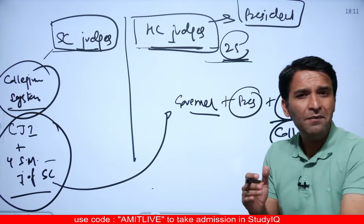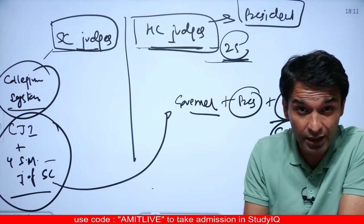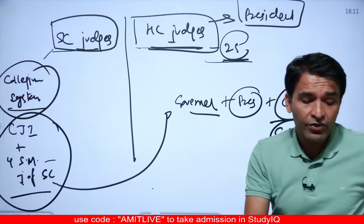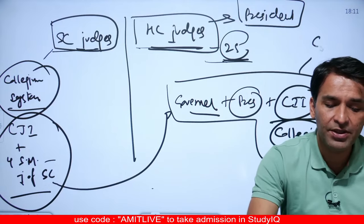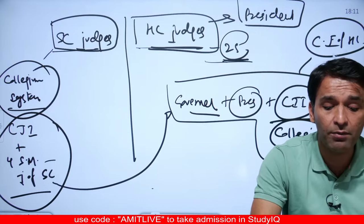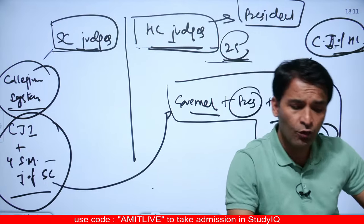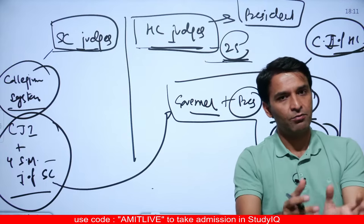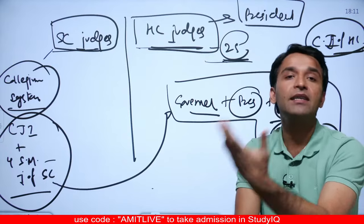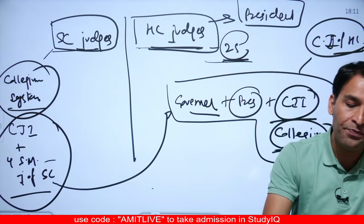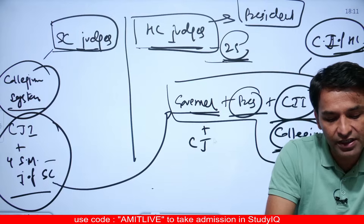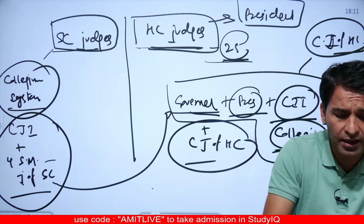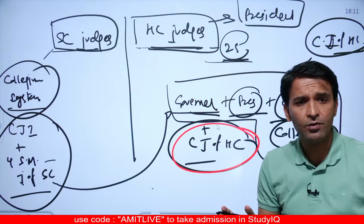When the Collegium recommends judges for a particular state's High Court, the Governor is also consulted. So the process involves the Governor, the President, and the Chief Justice of India — legally understood as the Collegium. For a common High Court covering two states, both Governors are consulted. For appointing the Chief Justice of a High Court, the recommendation comes from the Collegium and the Governor is also consulted. For other judges of that High Court, the Collegium, the President, the Governor, and the Chief Justice of that particular High Court are all involved.